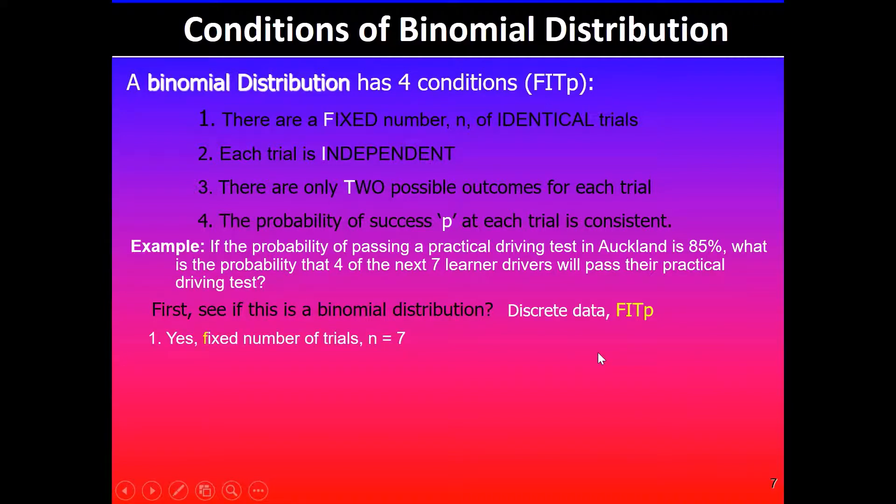We need to check whether it meets the four conditions for binomial distribution. We are told that it has got fixed number of trials, in this case seven learner drivers, so yes we know that it has got fixed number of trials. Each trial is independent, so what this means is the instructor does not care if last person passed or failed the driving test.